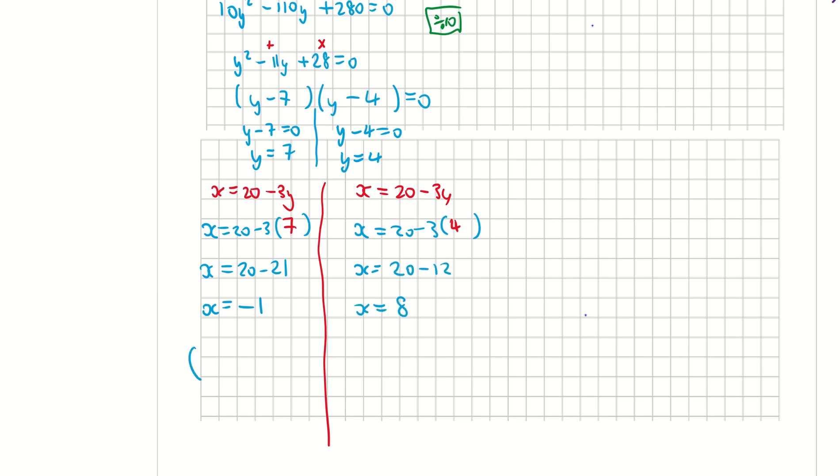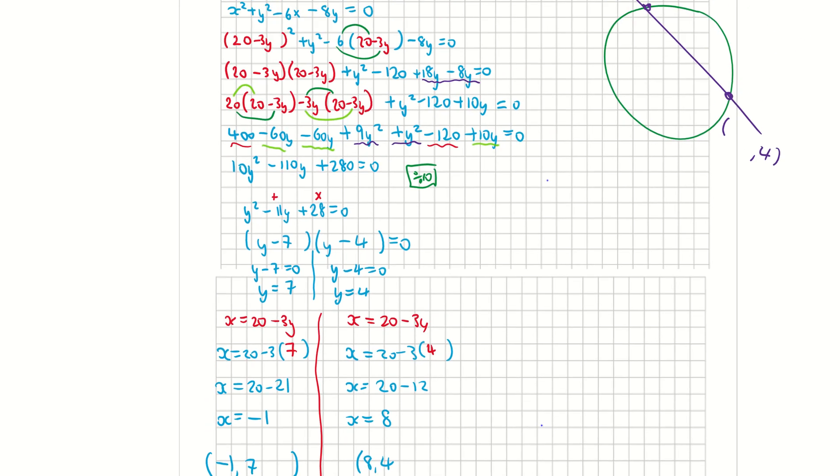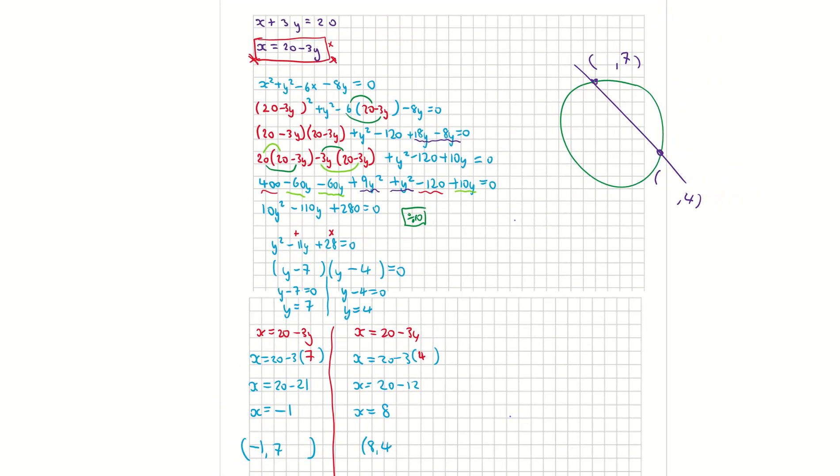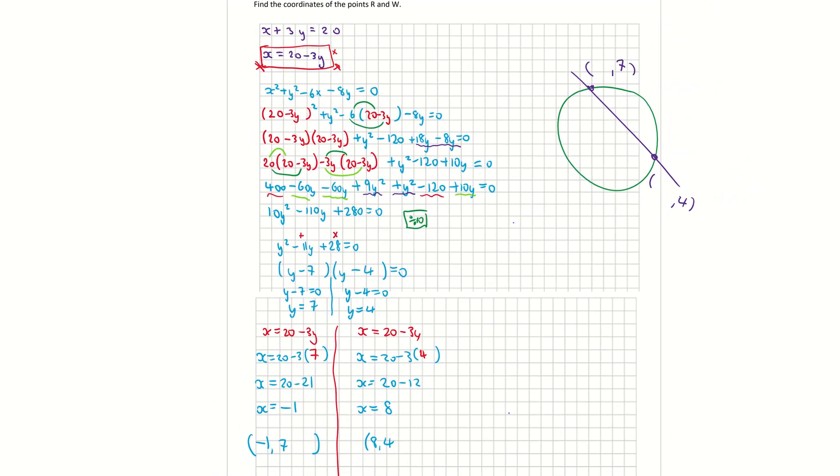So my two points R and W are (-1, 7) and (8, 4). If I come back here to my sketch and fill them in on my picture, it's going to be (-1, 7) and (8, 4). So there are my two points R and W. That's how to find the points of intersection between a line and a circle.